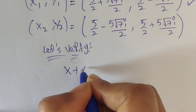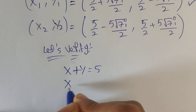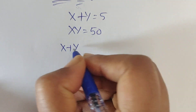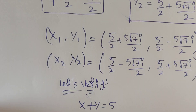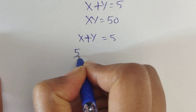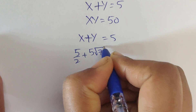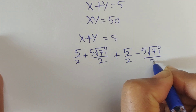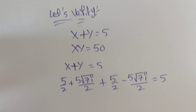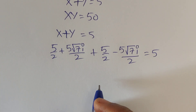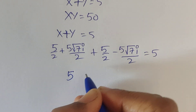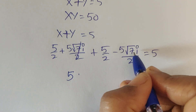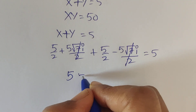Verification: The original equations are x plus y equals 5 and x times y equals 50. For x plus y: (5/2 plus 5√7 i /2) plus (5/2 minus 5√7 i /2) equals 5. The 5/2 terms add to give 5, and the imaginary parts cancel, confirming x plus y equals 5.